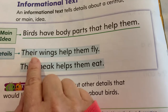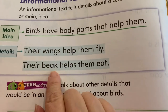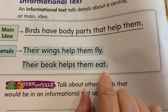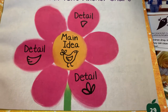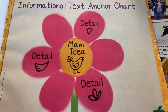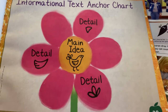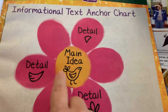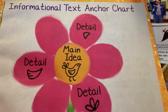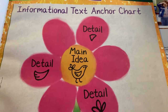The details include: their wings help them fly, and their beak helps them eat. Over here on page 29, this is a neat way to think about an informational text with an anchor chart. In the middle of the flower, we have the main idea, and then each petal would have a detail about the main idea.